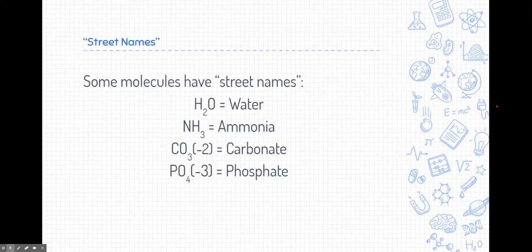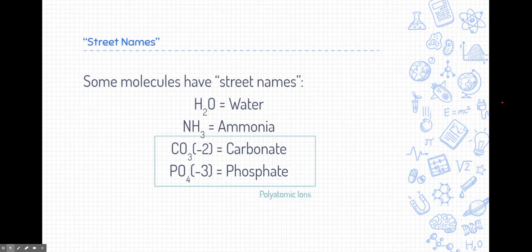Some molecules do have street names, or what I call street names, that's just names that we've been calling these molecules for a long time. For example, H2O, you're probably familiar calling that one water. That's his street name, even though we can also call it dihydrogen monoxide. Ammonia is another street name. It's NH3. We even are familiar with some of the polyatomic ions. Many of them are covalent compounds that have an overall charge, but they also have their own specialized names like carbonate and phosphate.